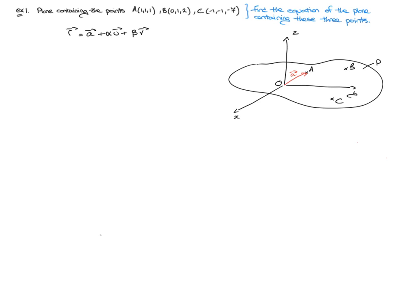In this case, it suggests that I take the vectors AB, which I'll rename as vector U, and the vector AC, which I'll rename as vector V. And there we go — I actually have everything I need right now to make the vector equation of this plane: a position vector of a point on the plane, that's A, and two non-collinear vectors contained in this plane, U and V.